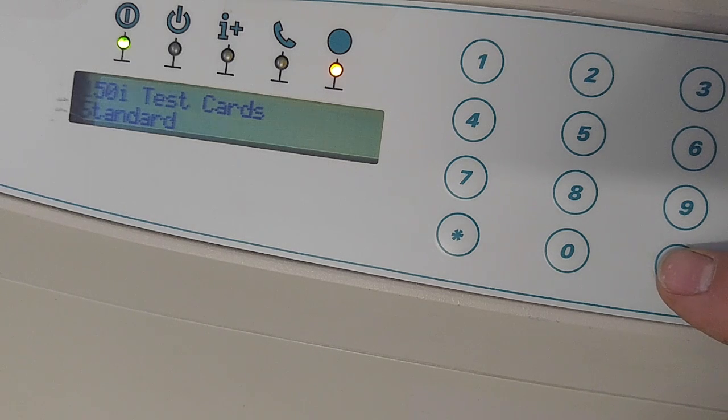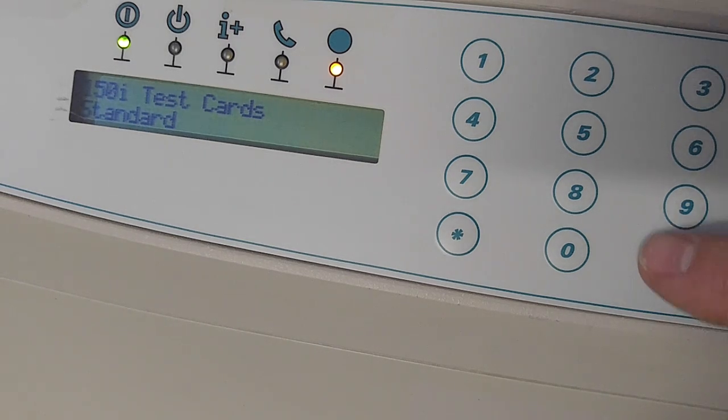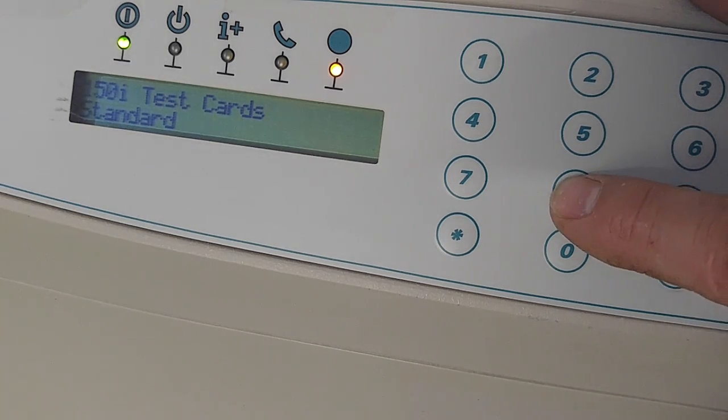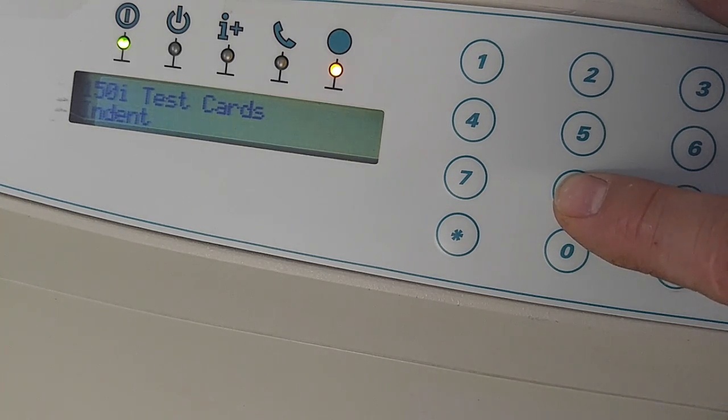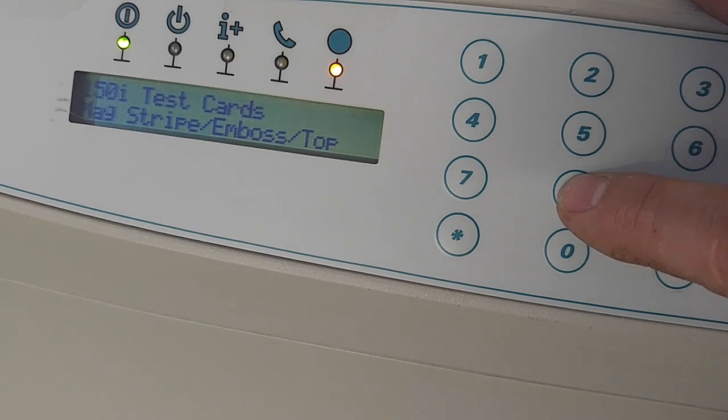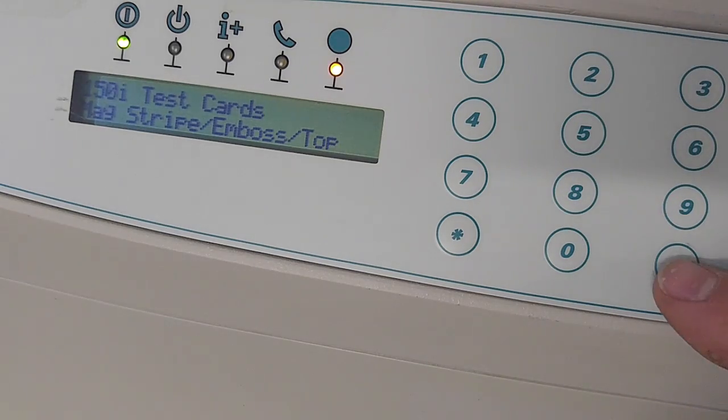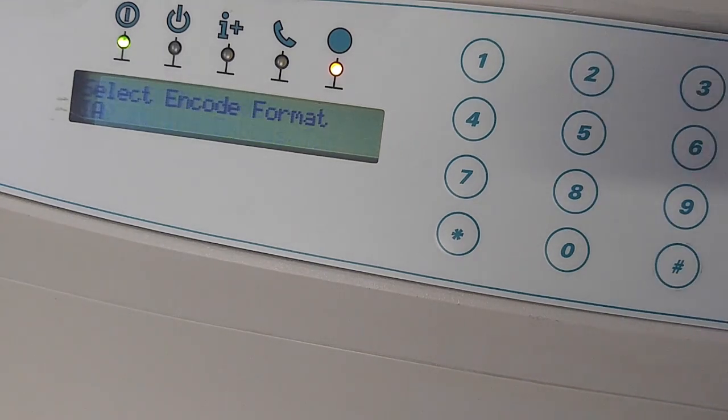There are several different options in here. The main ones that I would concern yourself with would be indent, which you can test in a couple of different ways, but there's also a mag stripe with emboss and then a mag stripe embossed top. So that would probably be the first one that I would start with. So you'll hit pound to select that.